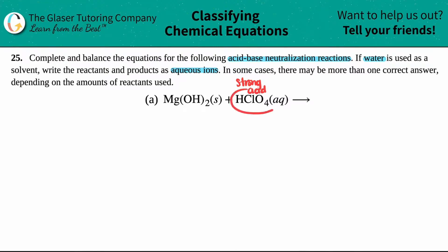So the other one — if HClO4 is the acid, that means this other compound has to be the base. Remember, bases are usually a metal with an OH. So acids have the H in the front; bases generally have an OH. I say 'with metals' because if you move on to organic chemistry, you're going to see OHs all over the place, and those don't act as bases.